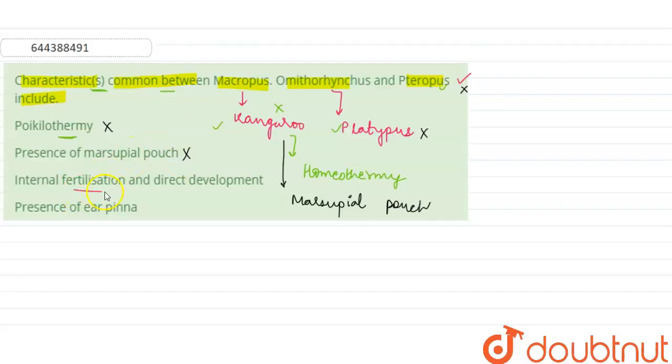Third option is internal fertilization and direct development. Pteropus does not show internal fertilization and direct development.